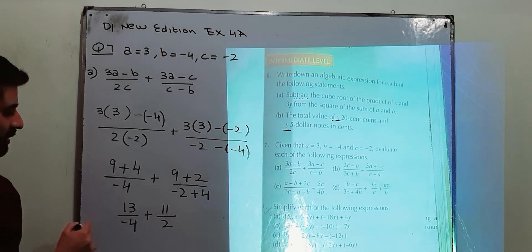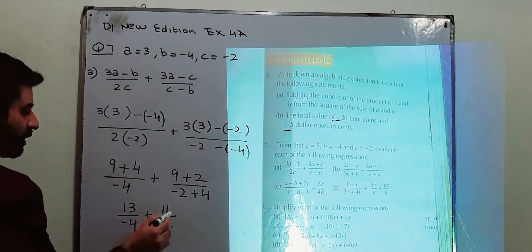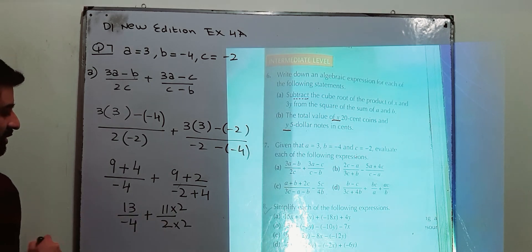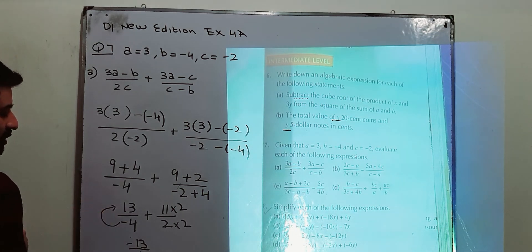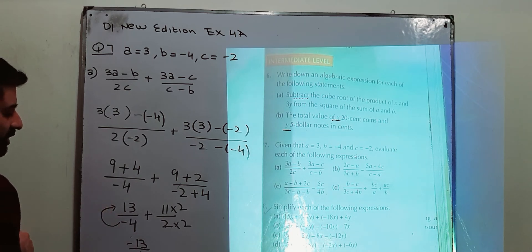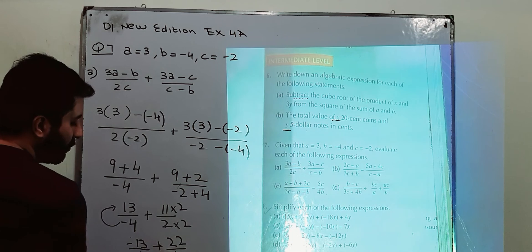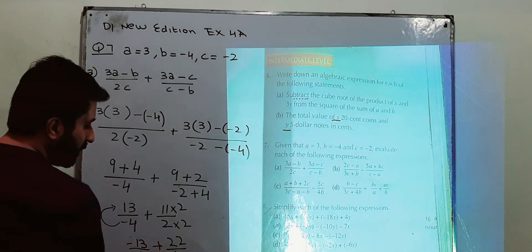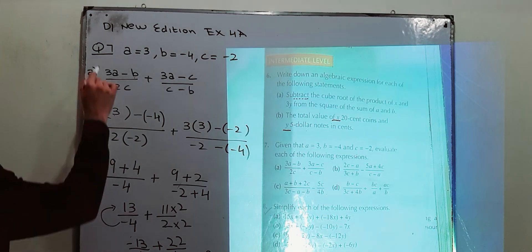Take the LCM by making the denominators equal — this is 2 and this is 4, so multiply the first fraction by 2 in numerator and denominator. This gives minus 13 over 4 — the negative sign is shifted to the numerator — plus 22 over 4. With LCM 4, it becomes minus 13 plus 22 over 4, which gives 9 over 4. This is the value of the expression for question number 7, part A.